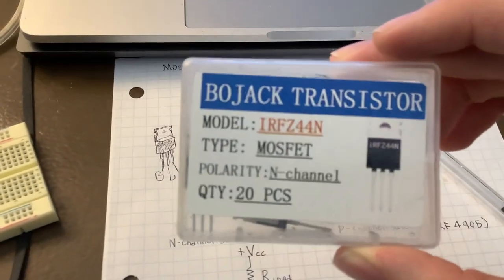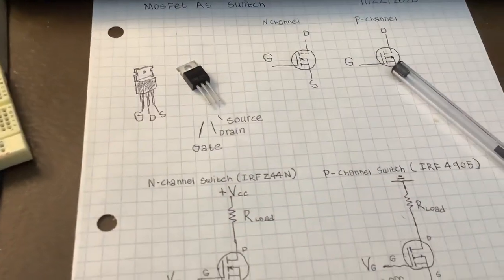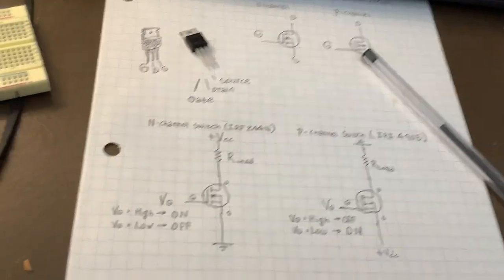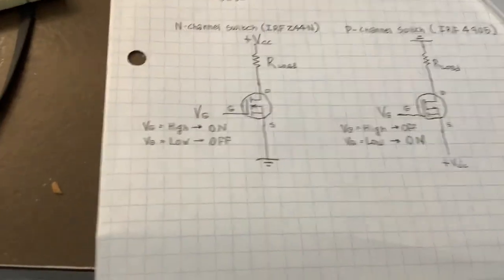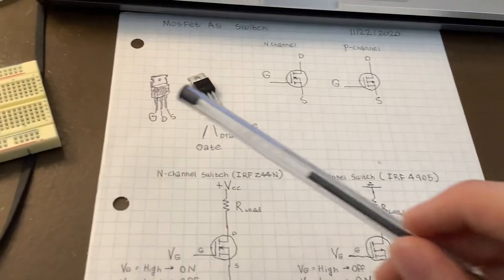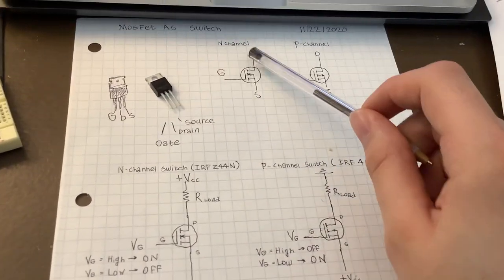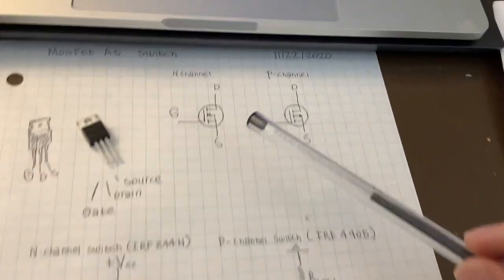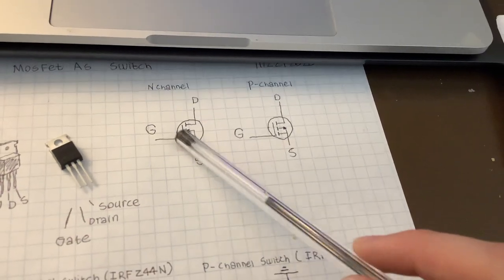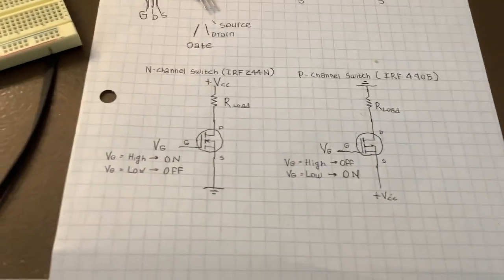Here's the IRFZ44N n-channel MOSFET I'm using in the circuit. These look exactly the same externally. To use a MOSFET as a switch, it has gate, drain, and source — and that corresponds on the schematic for both n-channel and p-channel types. Notice the difference: for the n-channel, the source has an arrow pointing one way; for the p-channel, it points the other way.